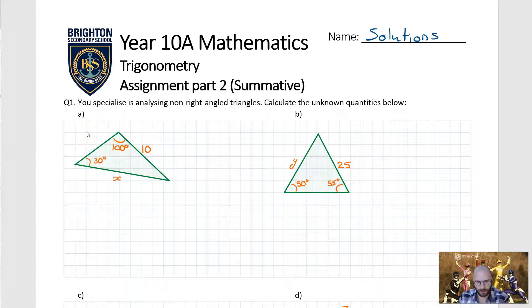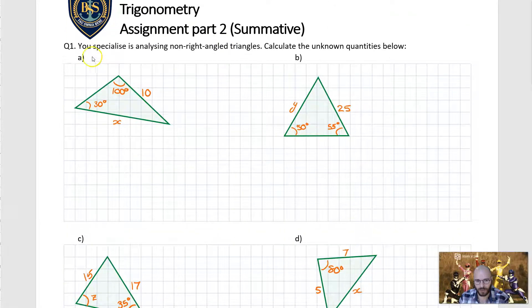Welcome. In this video we're going to go over the solutions for assignment 2 for our year 10 trigonometry topic. For question 1 you specialize in analyzing non-right-angled triangles. Calculate the unknown quantities below.